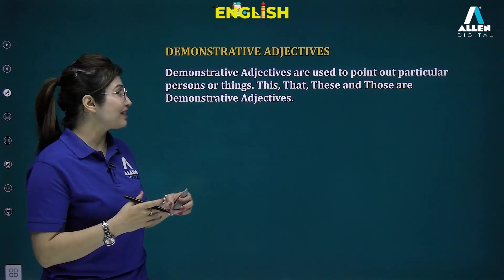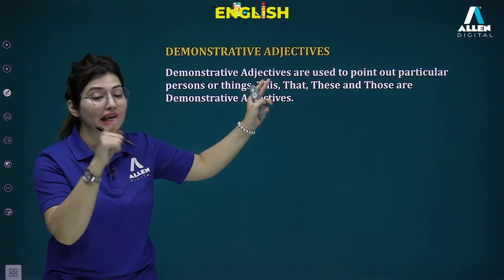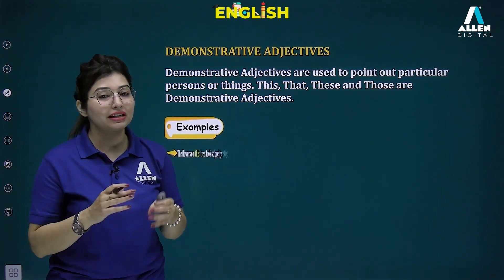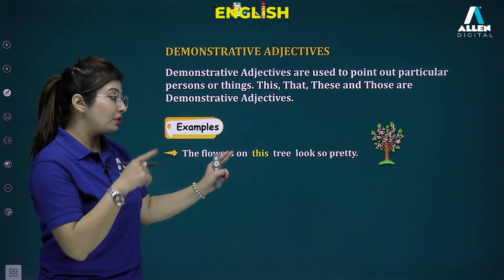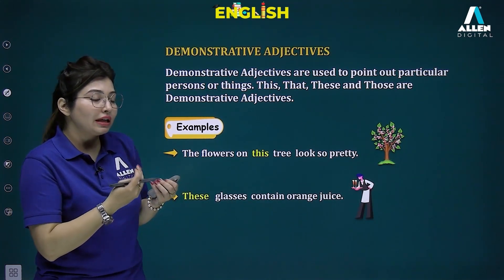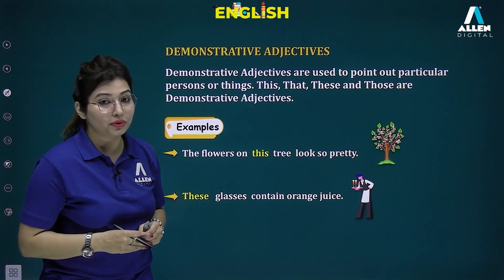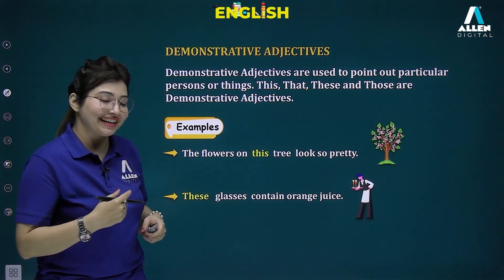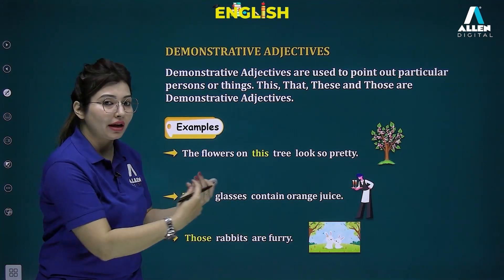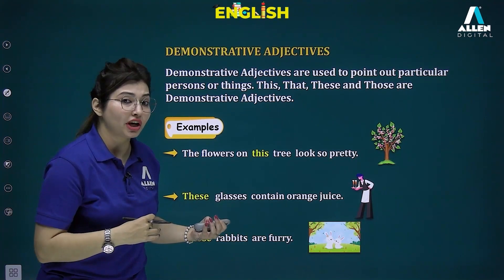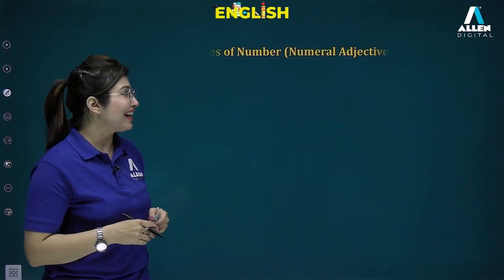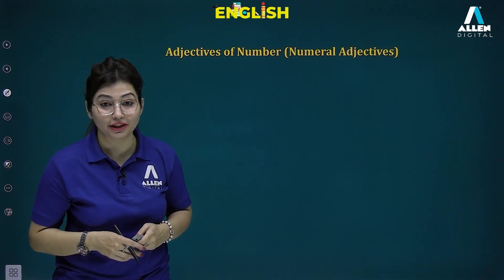Demonstrative adjectives use the words this, that, these, and those. 'The flowers on this tree look so pretty' — singular and near. 'These glasses contain orange juice' — plural and near. 'Those rabbits are furry' — plural and far away. Notice: 'furry' here is also an adjective describing a quality of rabbit, so think about whether it is demonstrating quality or quantity.